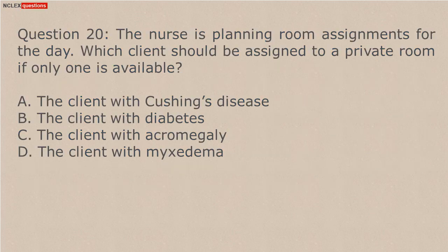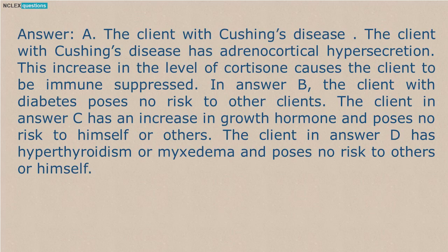Question 20. The nurse is planning room assignments for the day. Which client should be assigned to a private room if only one is available? Answer: A. The patient with Cushing's syndrome demonstrates truncal obesity, moon face, acne, abdominal striae, and hypertension. In Addison's disease, the patient experiences chronic adrenocortical insufficiency. In Graves' disease, the patient experiences hyperthyroidism. The individual with Hashimoto's disease demonstrates inflammation of the thyroid gland, resulting in hypothyroidism.